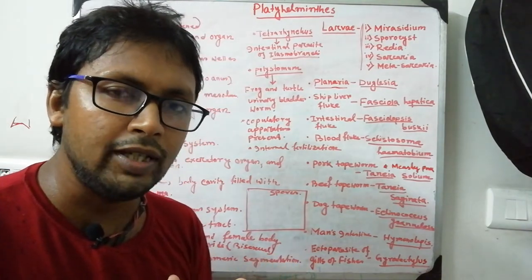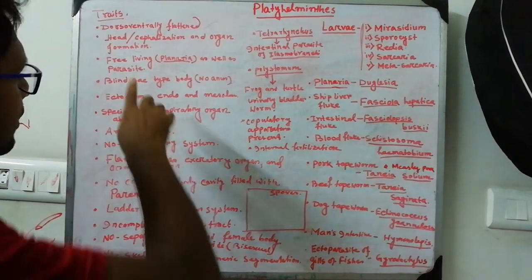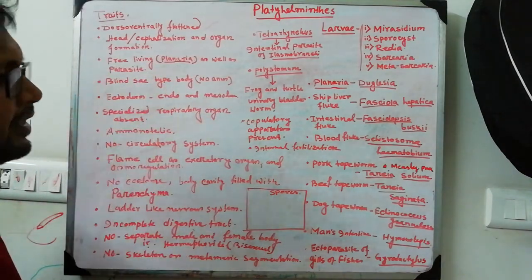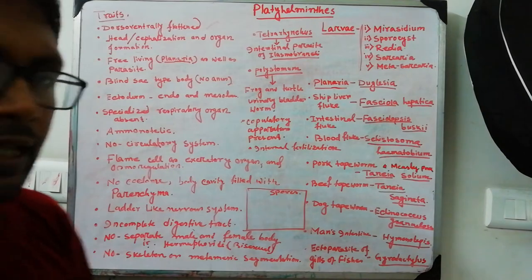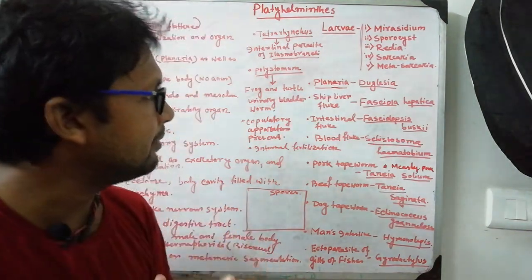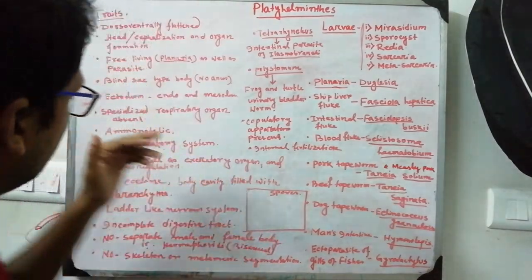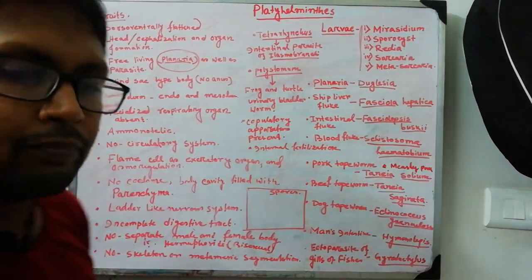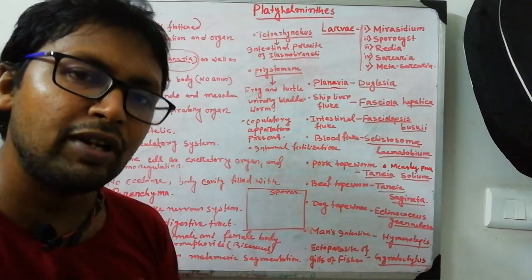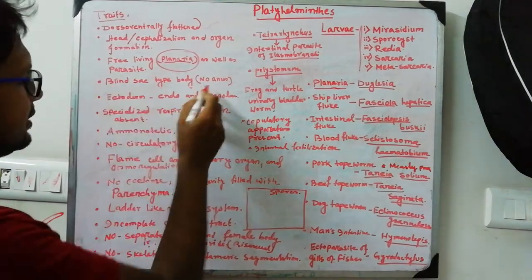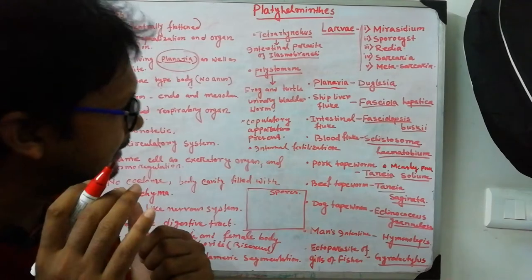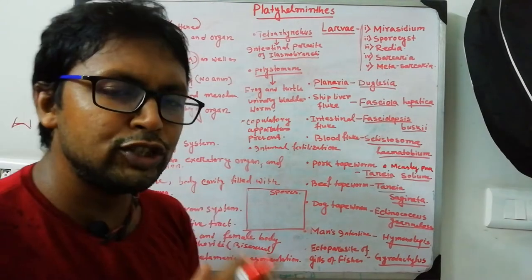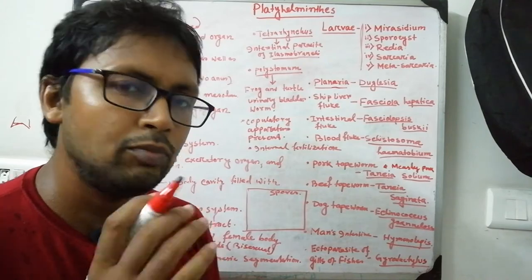Cephalization and organ formation occur in Platyhelminthes. They are both free-living and mostly parasitic. The common example of free-living is Planaria. They have a blind sac type body structure - that is, they have a mouth but no anus. This is also the case in Cnidarians as well as in Platyhelminthes. Questions are asked about which phylum has the blind sac type body structure.